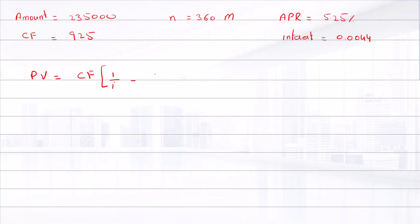And if we put values, cash flow is 925, and 1 divided by 0.0044 minus 1 over 0.0044 times 1.0044 raised to power 360. The total present value is $167,510.65.